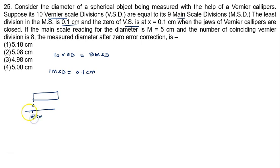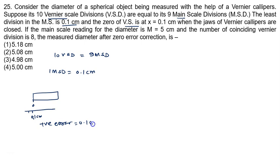There is a positive error in this situation. The value of the positive error is 0.1 cm. The main scale reading for the diameter is m equal to 5.